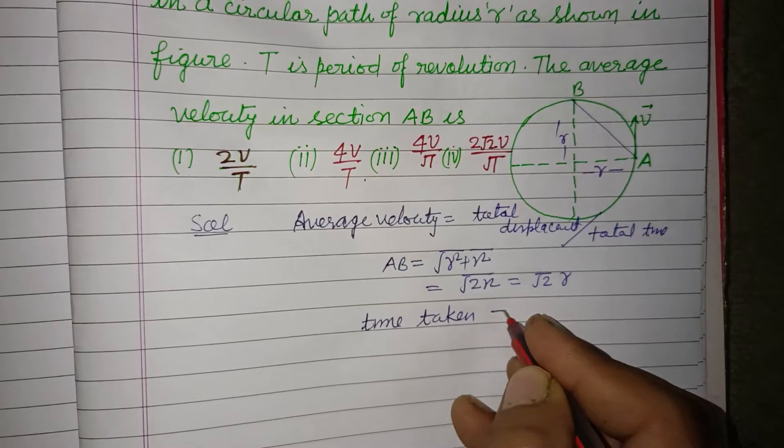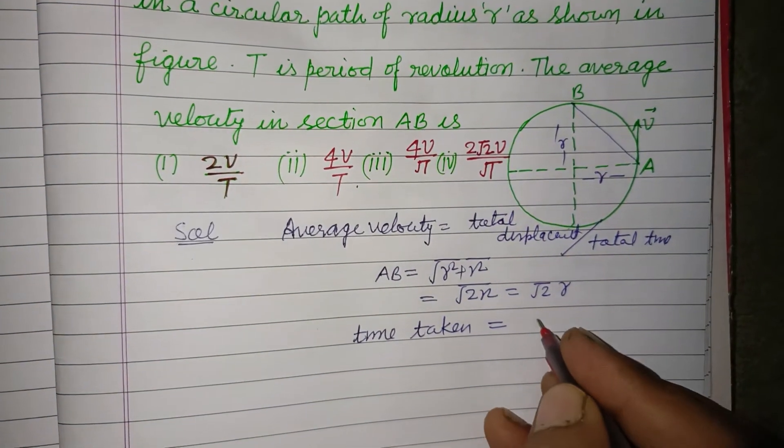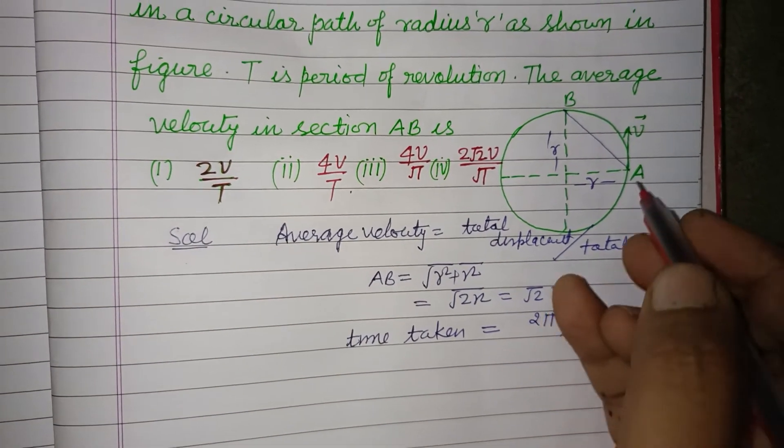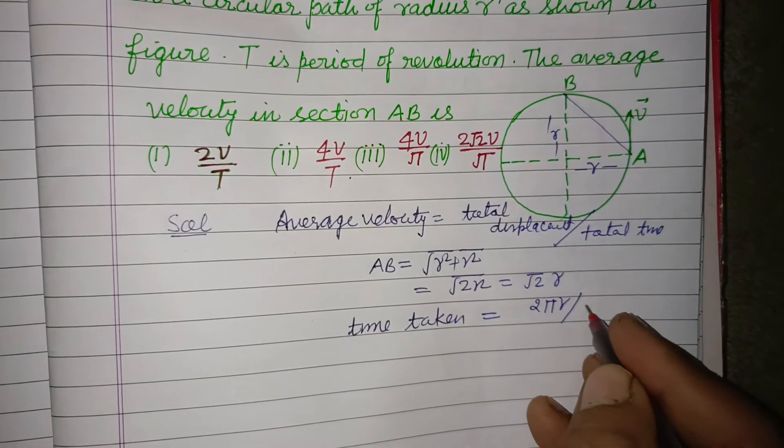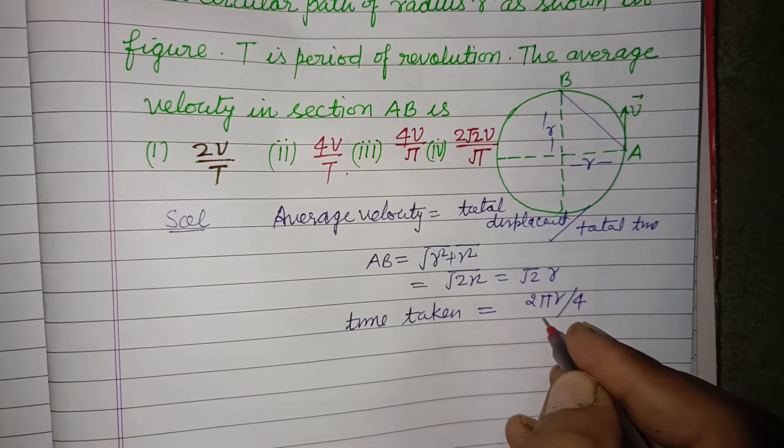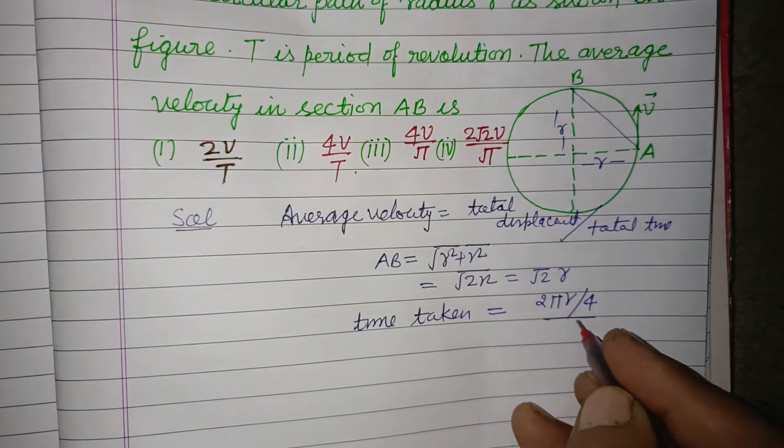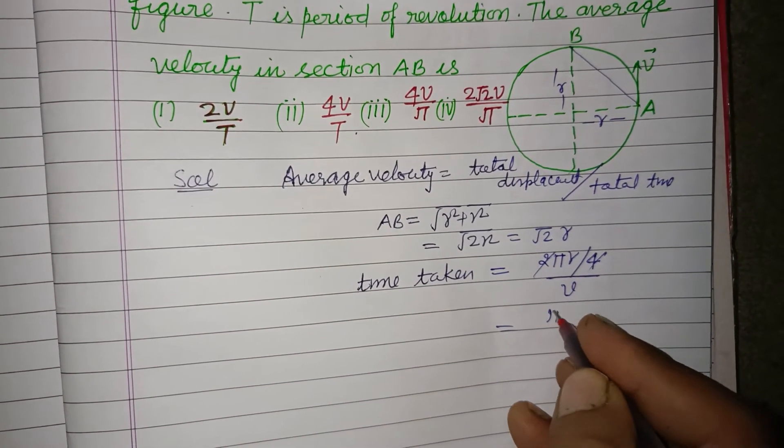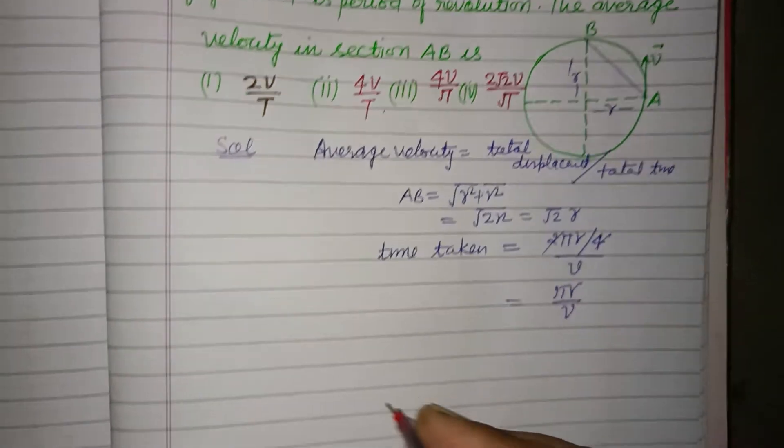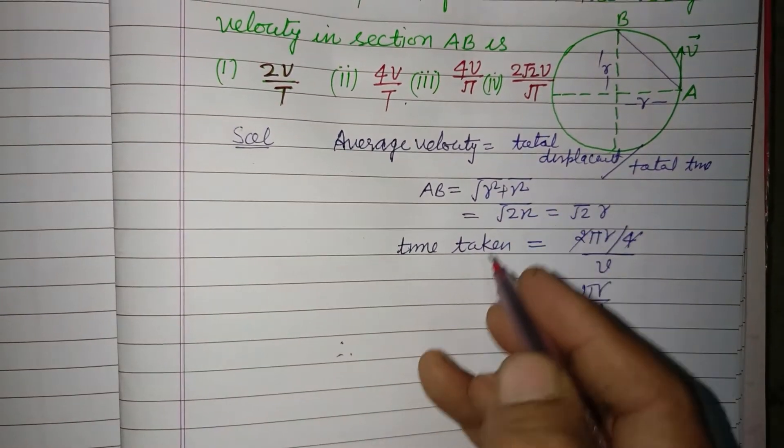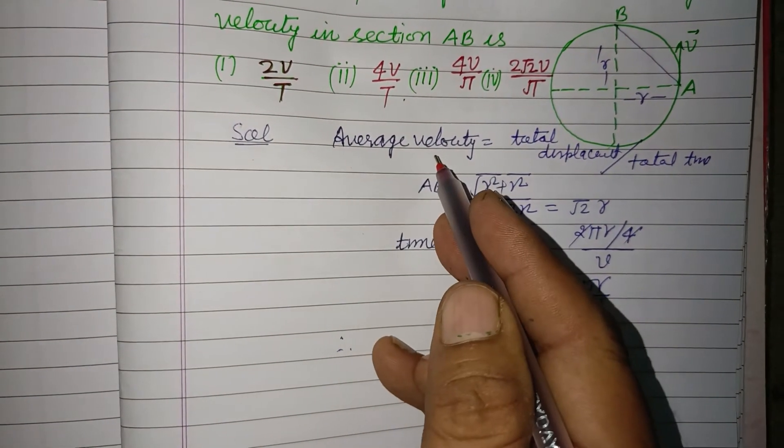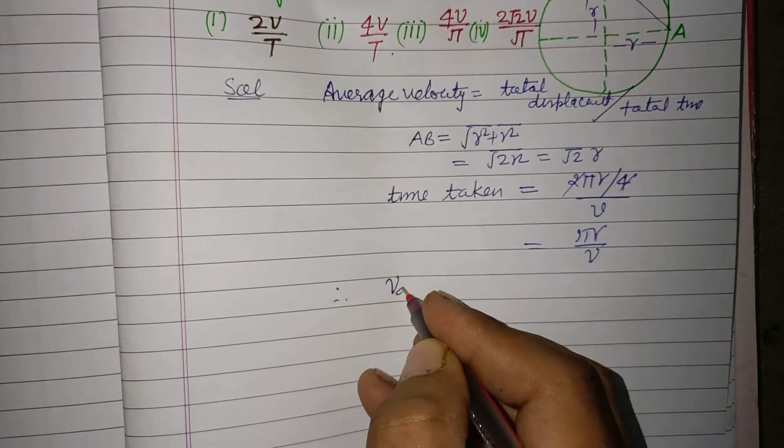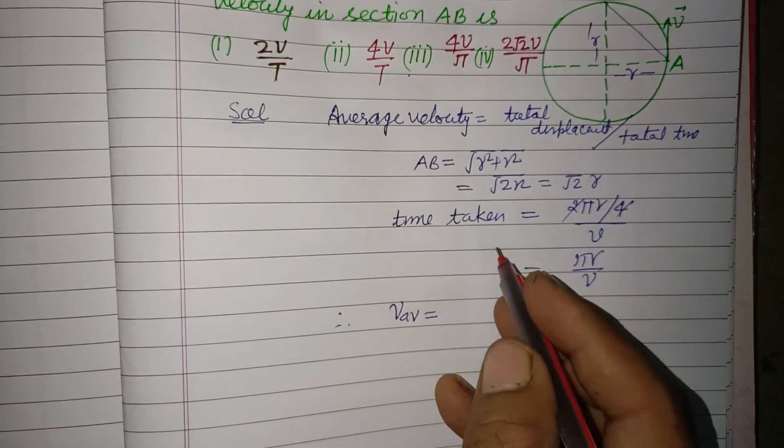Time taken to cover AB, which is 2πR, fourth part of this circumference, divided by 4 upon the velocity which is V. So this is πR upon V. So putting in formula, average velocity V average equals total distance AB upon time T.